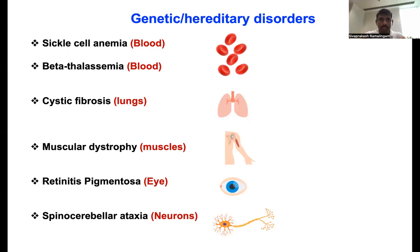Because of the mutation, there is less production of beta-globin and excess production of alpha-globin. That causes the chain imbalance, which leads to reduced erythropoiesis — that's why the patients have to go for regular blood transfusion.